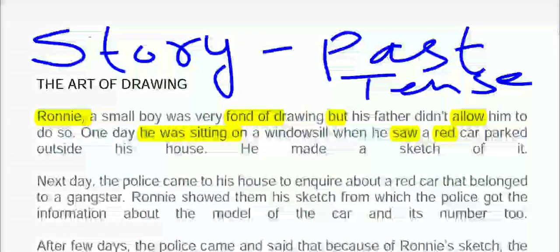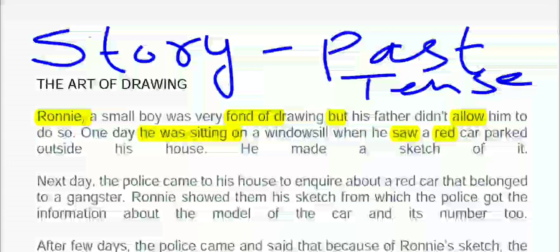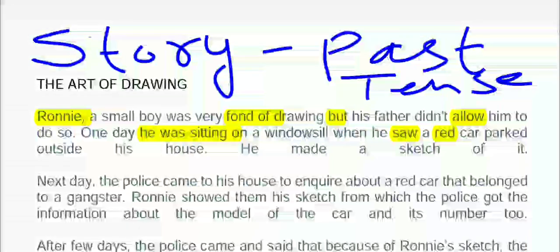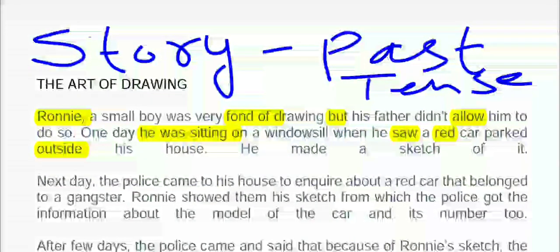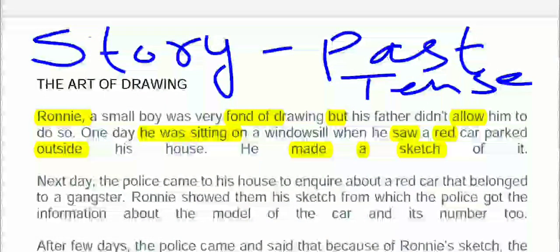Ek din kya hua — Roni, jo hai, chota ladka tha, jisko drawing karna bahut pasand tha. Par usko allow nahi karta tha. One day he was sitting on a windowsill — woh khidki mein baitha hua tha — jab usne ek red car dekhi, jo parked thi uske ghar ke bahar. Usne ek sketch bana diya, car ki drawing bana di. Kyunki usko toh shonk tha — jo bhi dekhta, uski drawing bana deta tha.